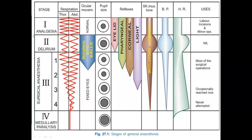Stage 1 is analgesia — from the beginning of injection of general anesthesia to loss of consciousness. Respiratory pattern is normal, ocular movement is normal, pupil size is normal. Eyelid, pharyngeal, corneal, and light reflexes are all present. Skeletal muscle tone, blood pressure, and heart rate are all maintained. Minor operations and labor incisions can be performed in this stage.